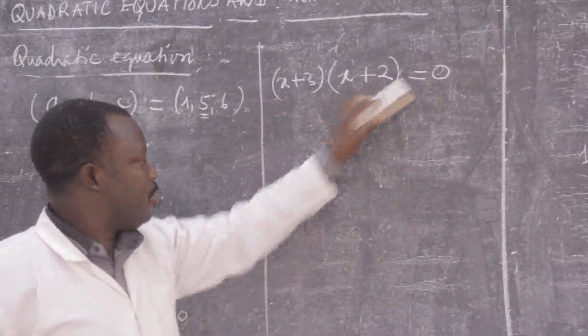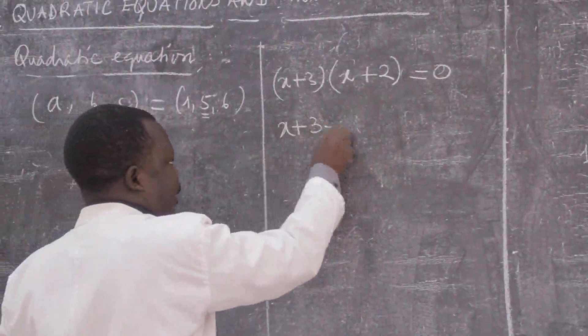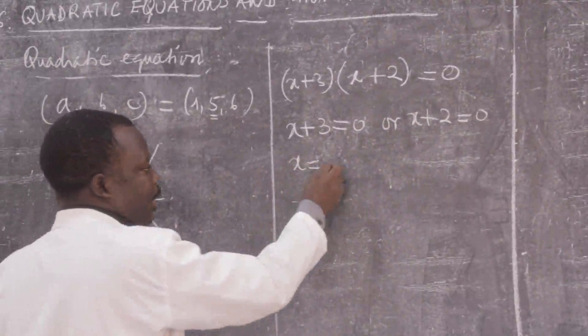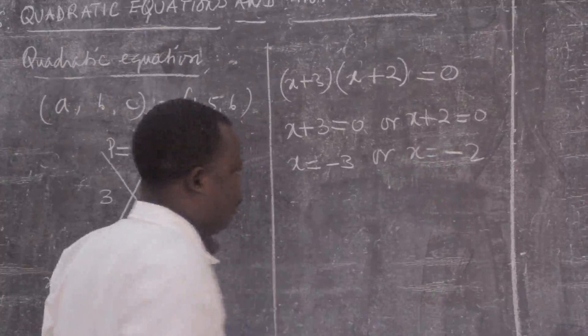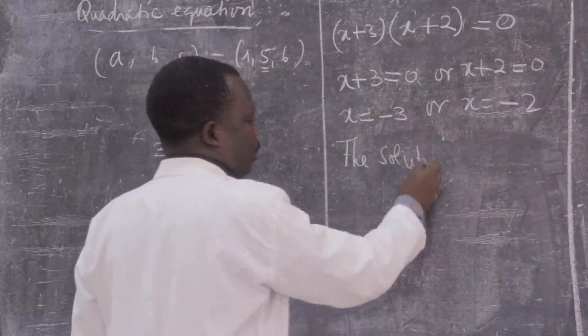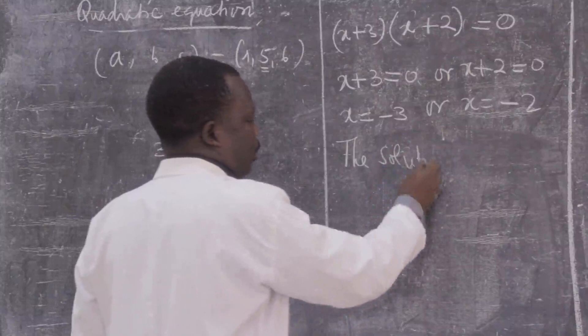We get (x + 3)(x + 2) = 0. Since the product equals 0, either x + 3 = 0 or x + 2 = 0, giving x = -3 or x = -2. Thus the solution set is {-3, -2}.